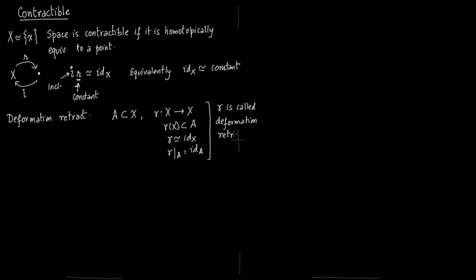So the deformation retract of X to the set A. You can also see it this way. You first have map R, then you have map I the inclusion map. If you first apply I and then apply R, you get the identity on A. In fact there is an equal sign here: RI is equal to the identity on A. If you apply R first and then I, this is equal to R and that is homotopic to the identity on X.